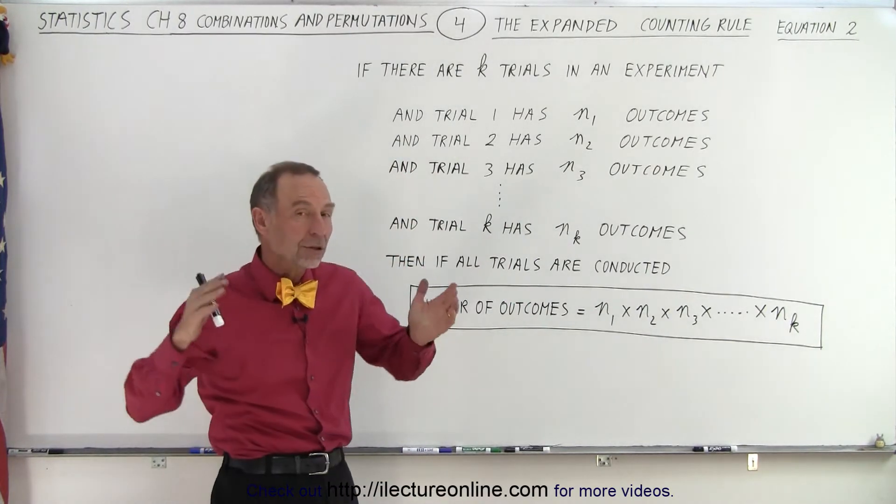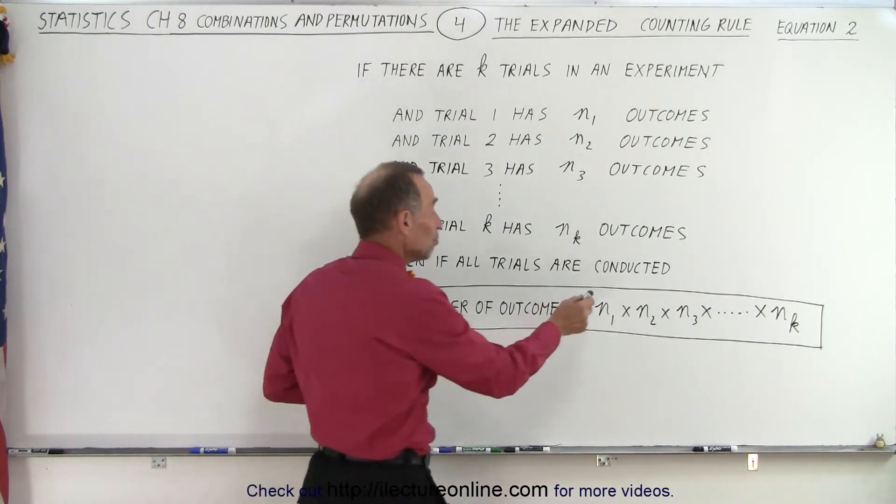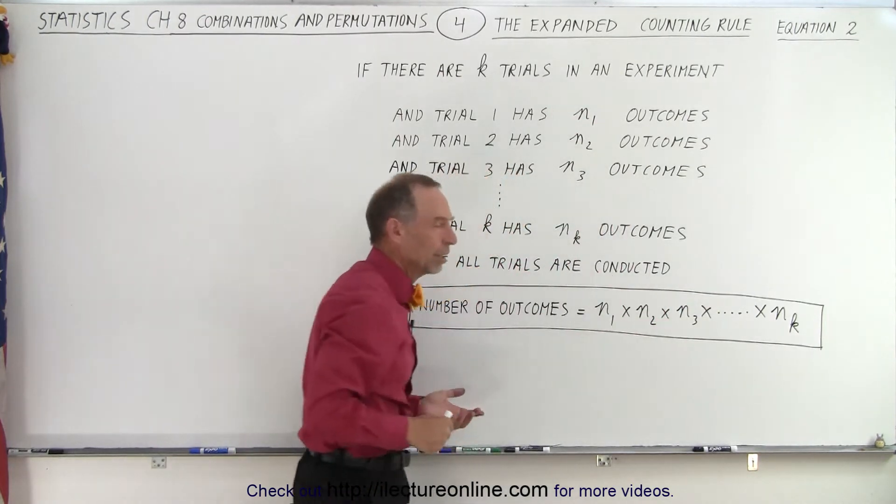If we now conduct all of the trials and want to see the number of outcomes, all we need to do is multiply the outcomes of each individual trial.